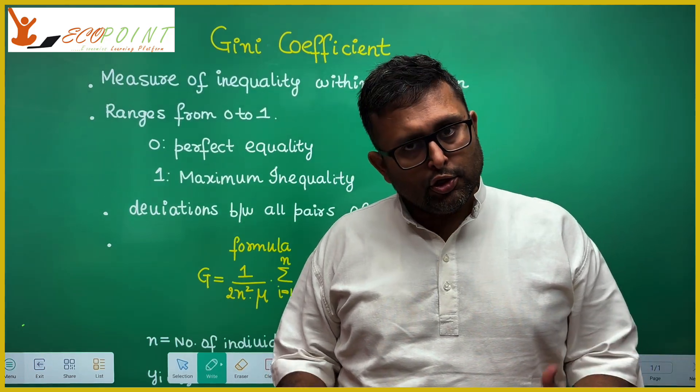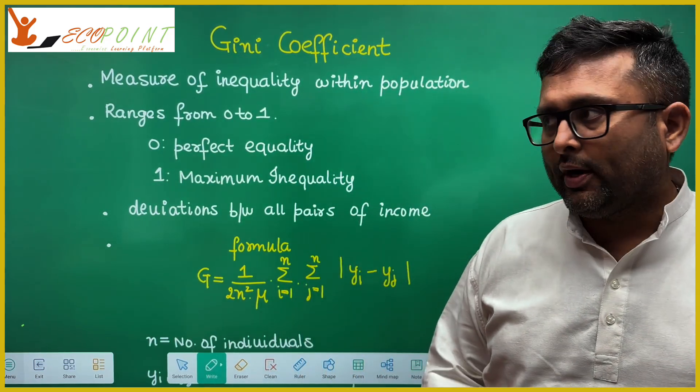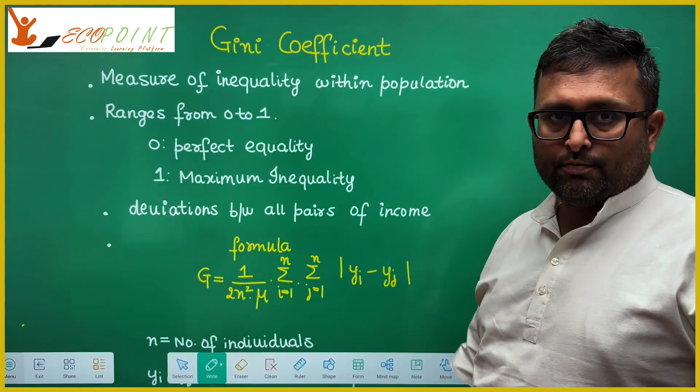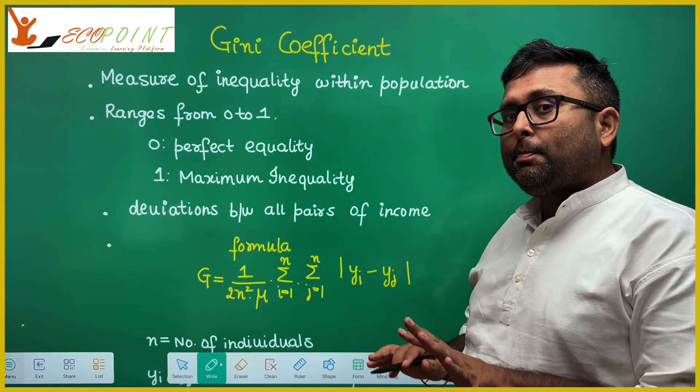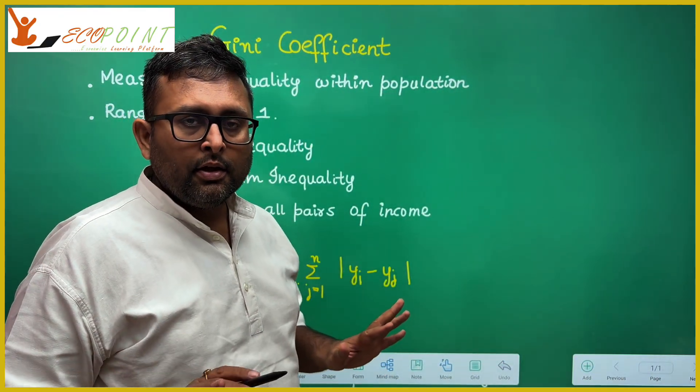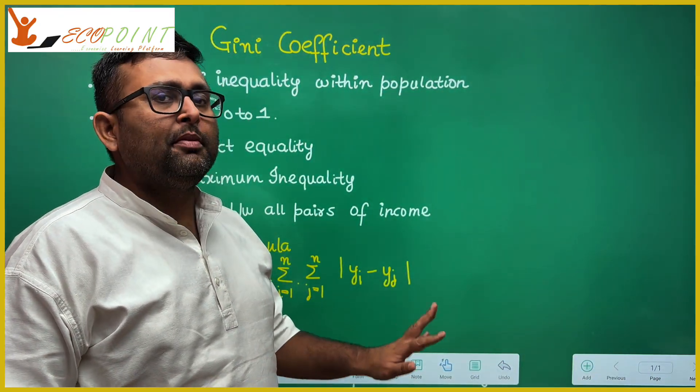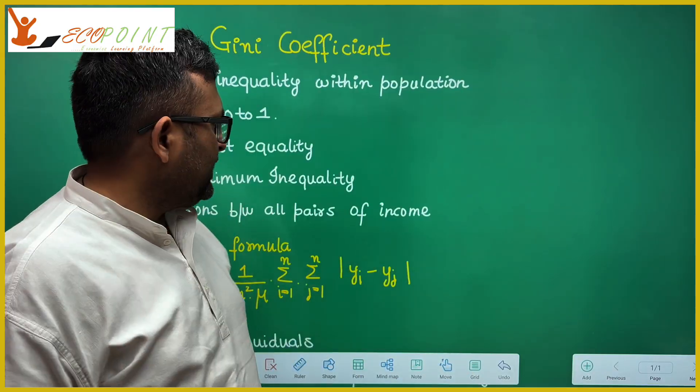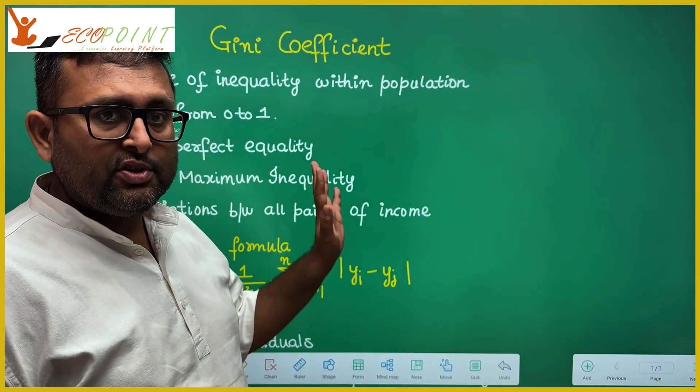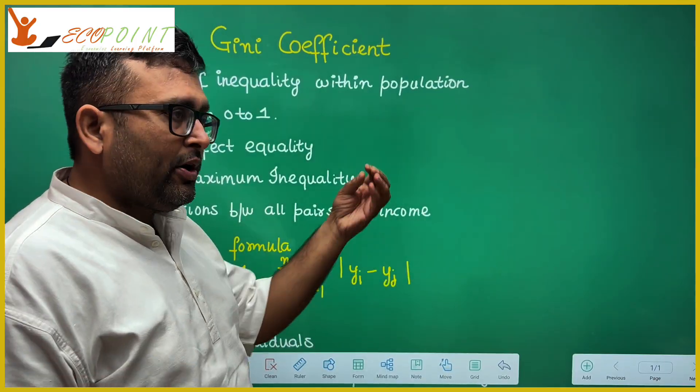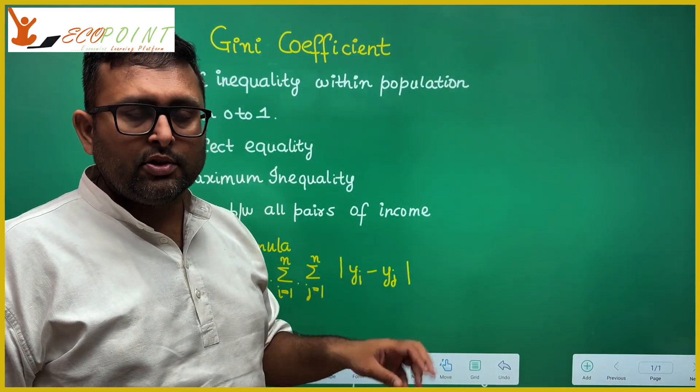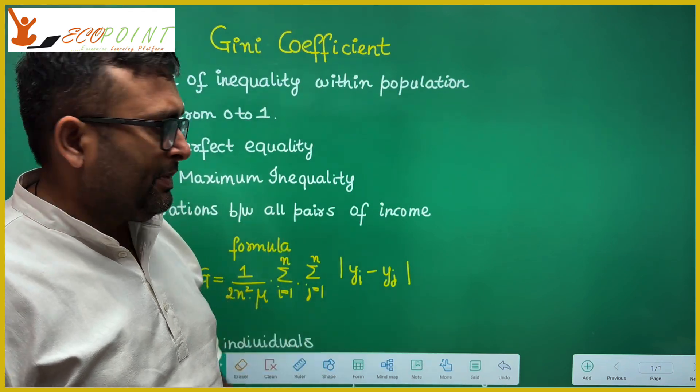Gini coefficient. This is also one of the measures to measure inequality and it ranges from 0 to 1. 0 means perfect equality, there is no inequality, so everyone is earning the same income. 1 means maximum inequality. In case the Gini coefficient comes out to be 1, it means that only one person is earning everything and nobody earns anything else. So there is perfect inequality or maximum inequality.